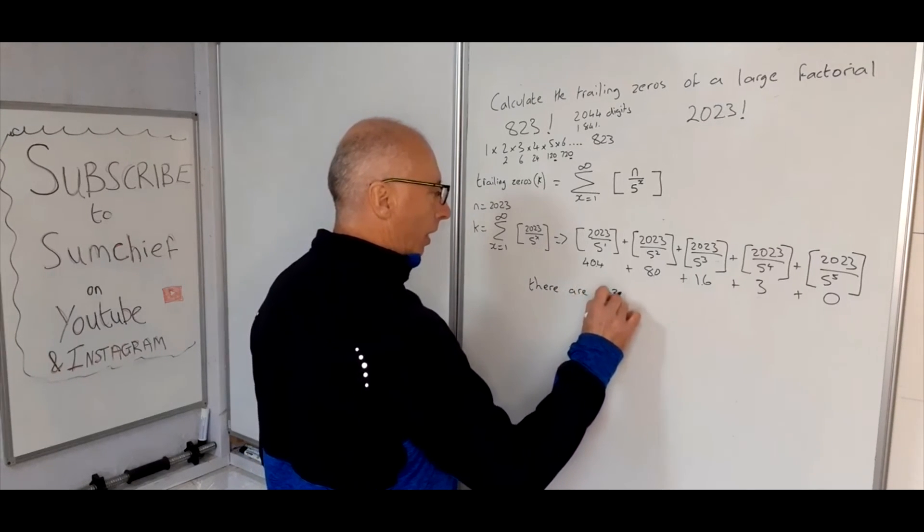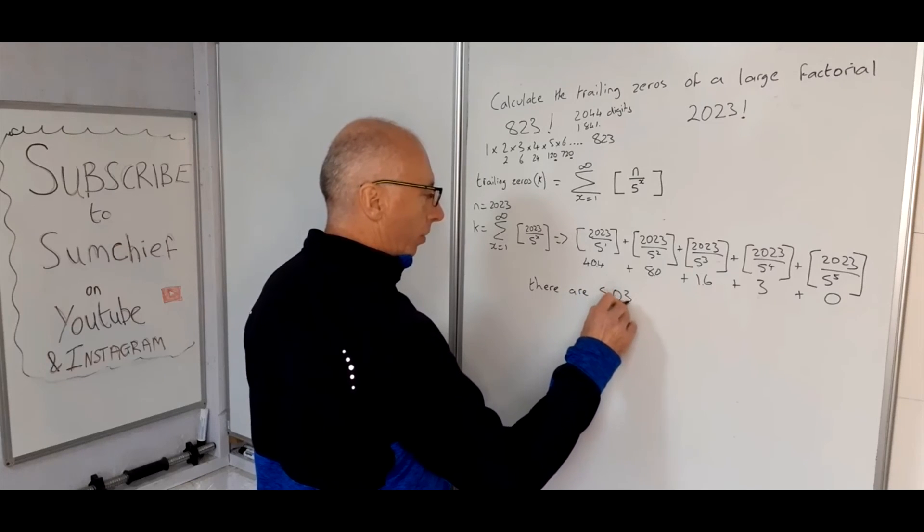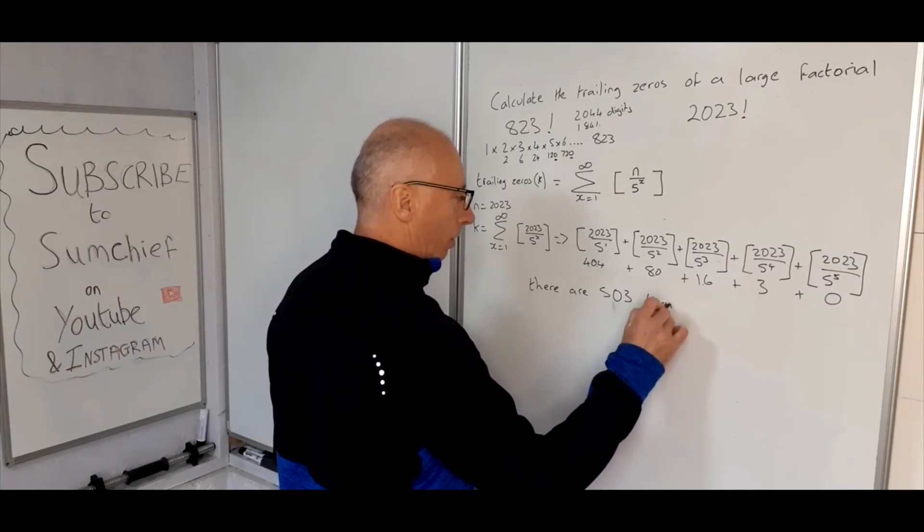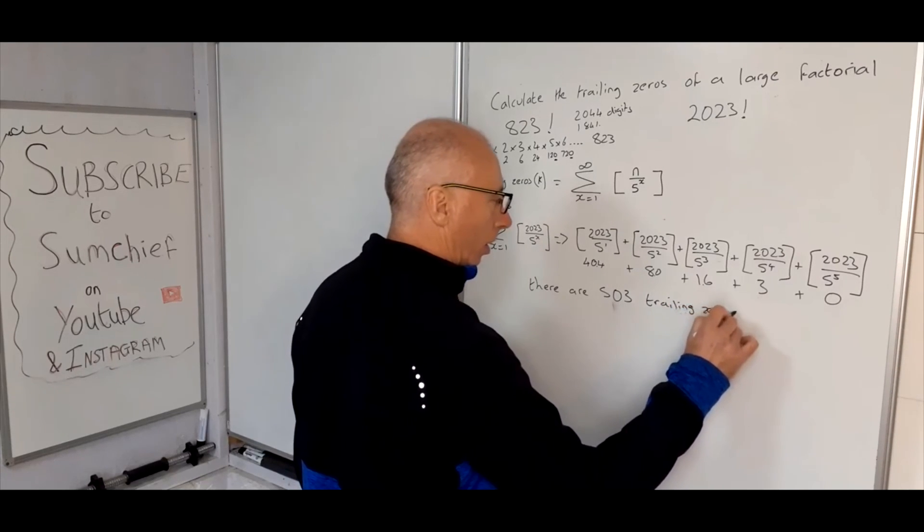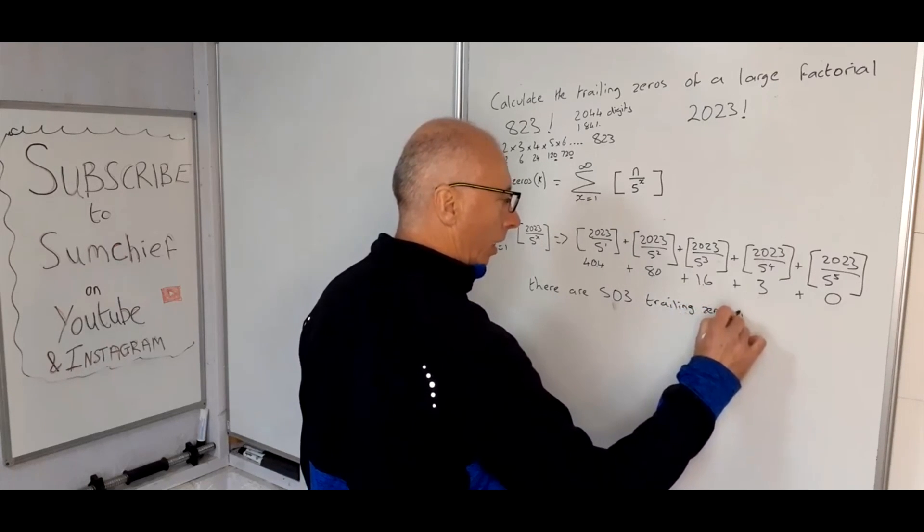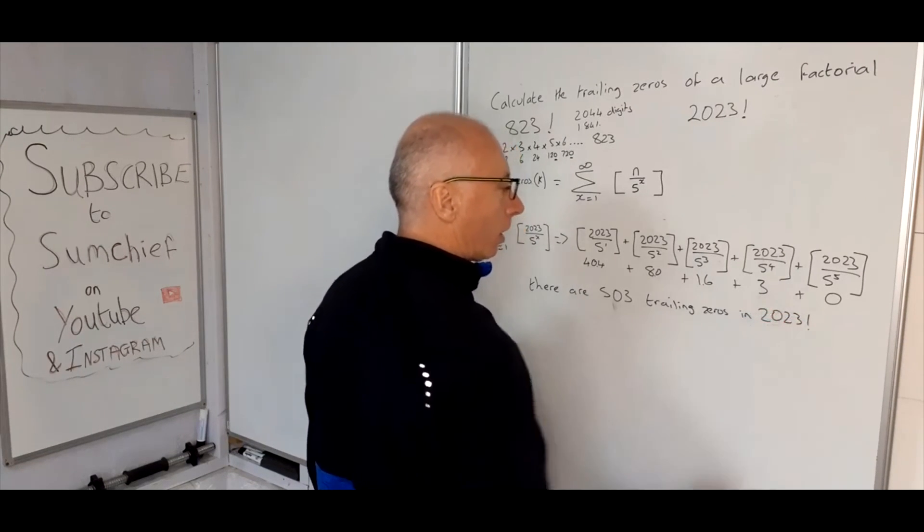All that's left to do now is to add these up, which is 404, 484, 500, 503. So therefore we can say there are 503 trailing zeros in 2023 factorial.